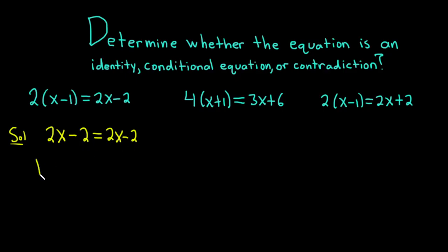So 2x minus 2 is equal to 2x minus 2. This is always true. Always. And so in this case we have an identity, because it is always true.